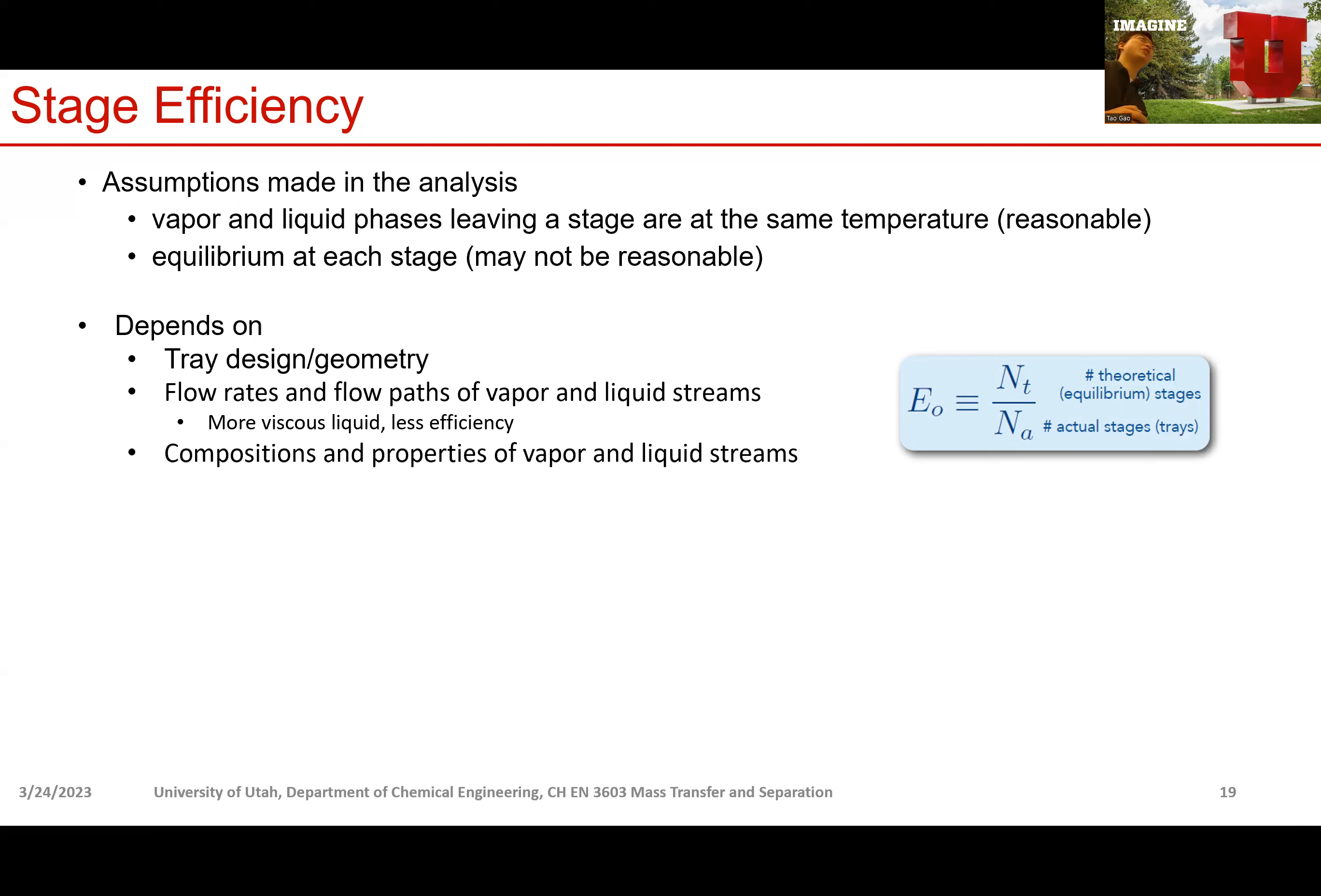And then actually, you can do experiments to figure out what's the real number of equilibrium stages to achieve the desired separation outcome. So in that scenario, you can compute a ratio that's the number of theoretical equilibrium stages divided by the actual stages. That gives you the stage efficiency.